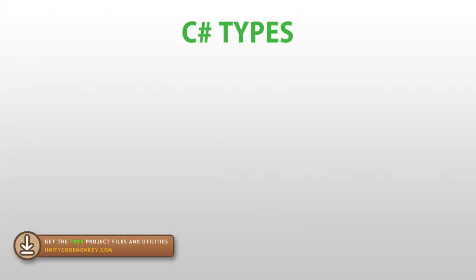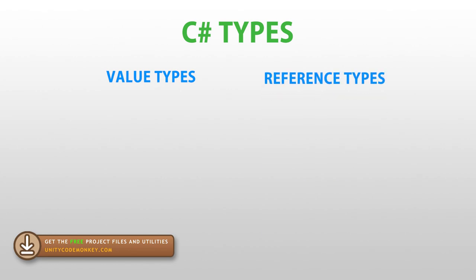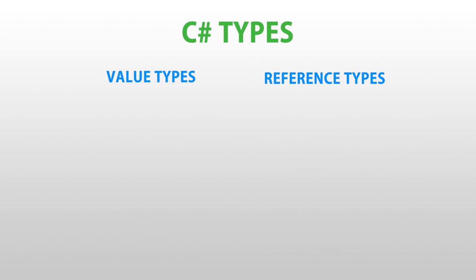So in C#, you have several types, and mainly they are either value types or reference types. They behave quite differently and can lead to a lot of confusion if you don't know how they actually work. Reference types store references to their data, whereas value types directly contain their data.